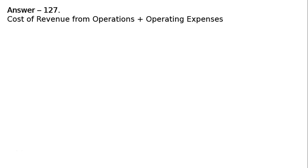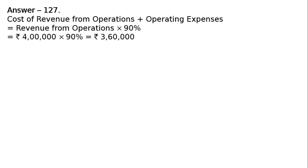Cost of revenue from operations plus operating expenses equals revenue from operations multiplied by 90%. This is the operating ratio — cost of revenue from operations plus operating expenses constitutes 90% of sales. Revenue from operations is given to us, so 90% equals rupees three lakh sixty thousand, which is the cost of revenue from operations.